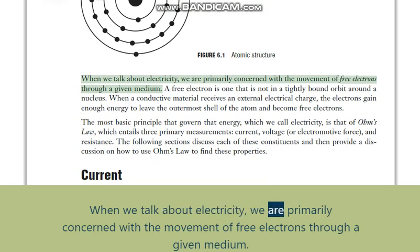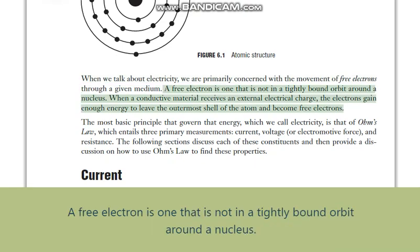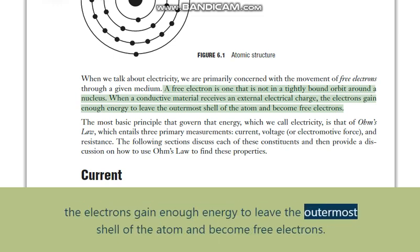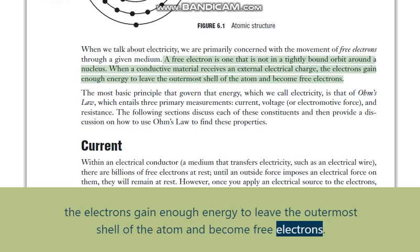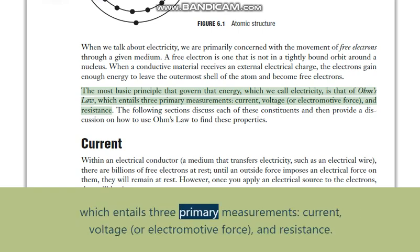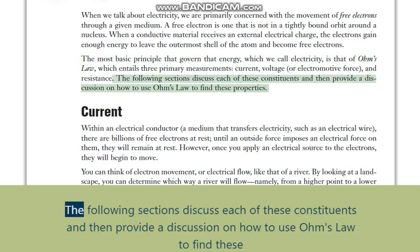When we talk about electricity, we are primarily concerned with the movement of free electrons through a given medium. A free electron is one that is not in a tightly bound orbit around a nucleus. When a conductive material receives an external electrical charge, the electrons gain enough energy to leave the outermost shell of the atom and become free electrons. The most basic principle governing that energy — which we call electricity — is Ohm's Law, which entails three primary measurements: current, voltage (or electromotive force), and resistance.